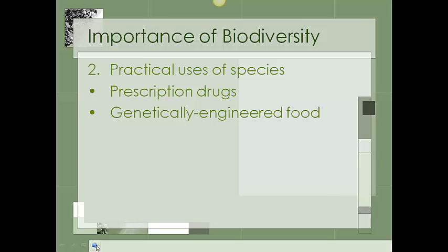Secondly, we can use different plants and animals to genetically engineer our food. Most of the produce you buy at the grocery store — apples, oranges, tomatoes, lettuce — has genes introduced from other organisms. Farmers are mostly familiar with this because we have moved different genes from organisms into corn and soybean plants so that they will be resistant to certain insects. So if we don't have a wide variety of species to choose from, we don't have many species to use for genetically engineered food that we rely on. Having lots of different types is important because we can use those genes to help improve other organisms.